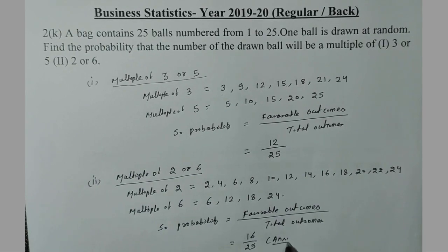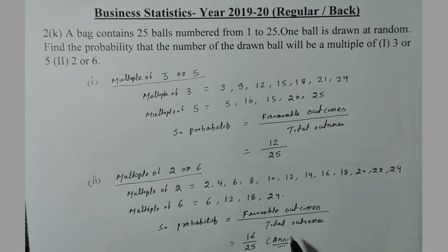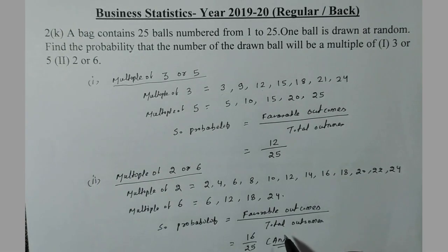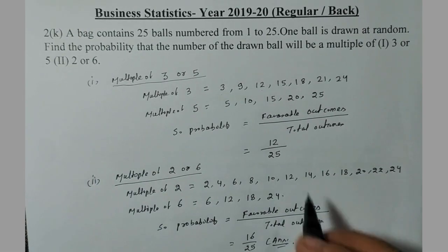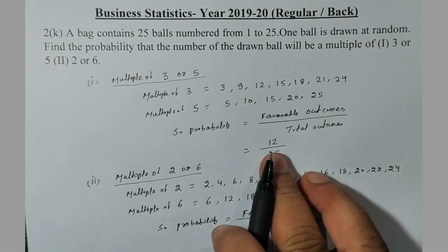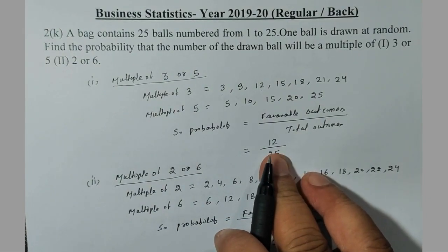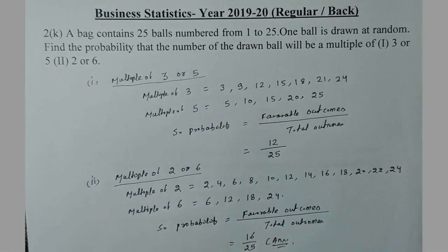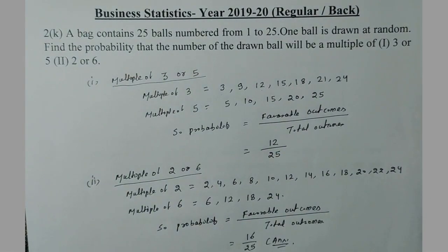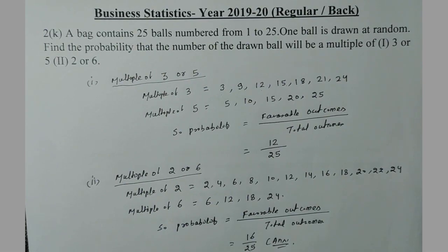So this is our probability of multiple of 2 or 6, and the first one was the probability of multiple of 3 or 5. Thank you for watching this video. Kindly like, share, and subscribe to this channel. Thank you.